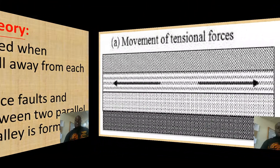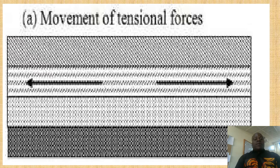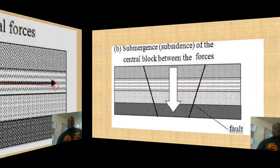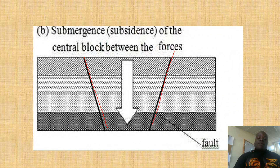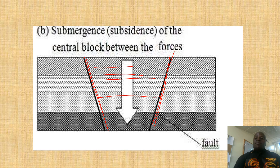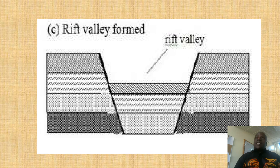Let us see. This is step number one — this crustal block is subjected to tensional forces pulling away from each other. The lines of weakness — the cracks — the fault lines are formed on both sides. And this means that the central block will be formed, and it will sink. The sinking leaves a depression which is called a rift valley.